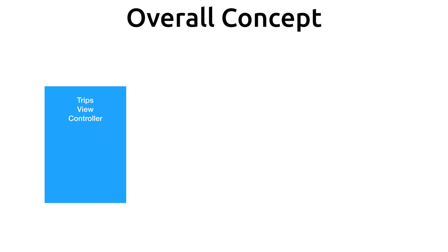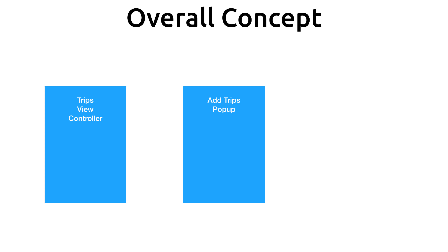I want to explain the overall concept before we jump into coding. We have our trips view controller that will be shown first. From here we tap an add button which shows the user our add trips pop-up — this part is already done and coded. What we want to do is after we're done adding the new trip through the pop-up, we want to save it to our data store, then reload our table view of trips so the new trip is shown.